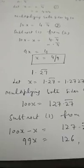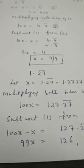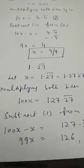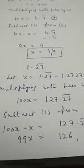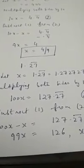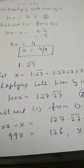Next example, 1.27 bar. Which digit is repeating here? 27. So, x can be written as 1.27 bar. That is 1.272727. Now, there are 2 digits.